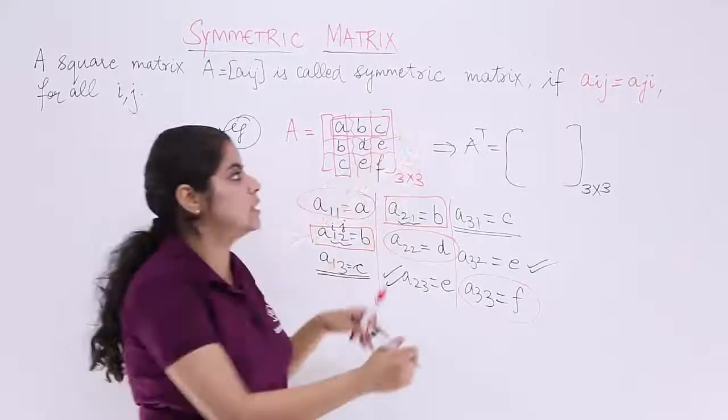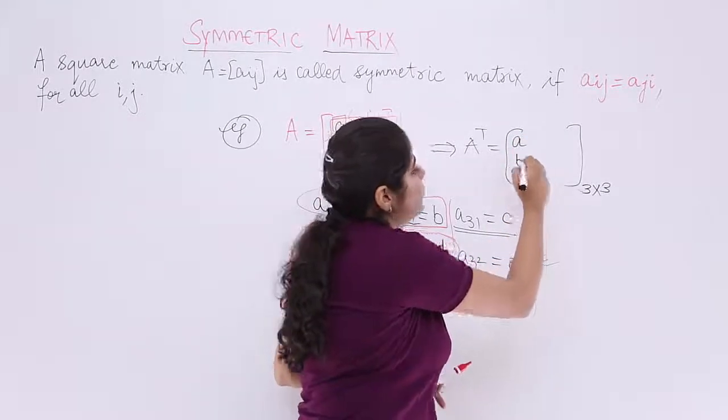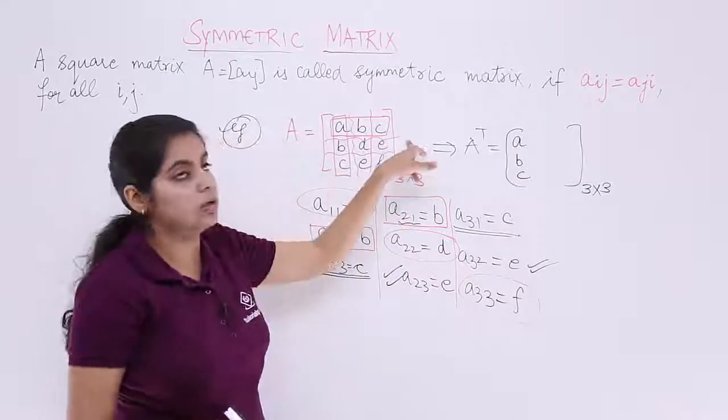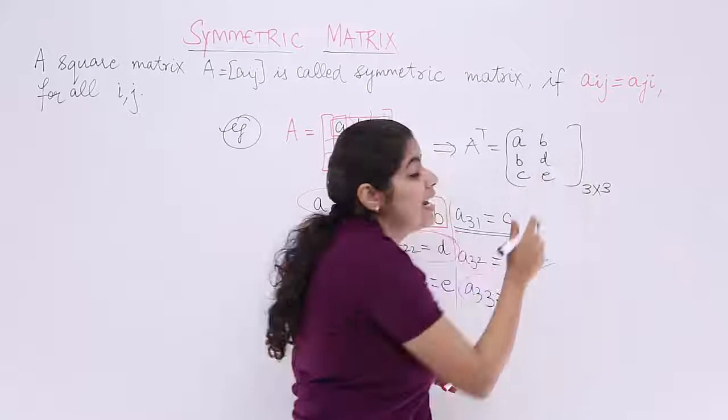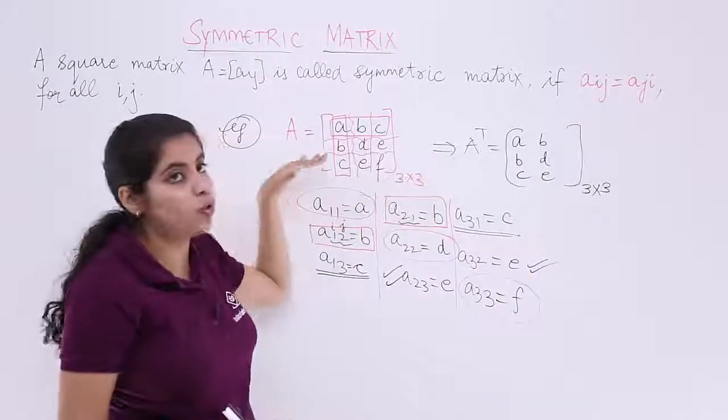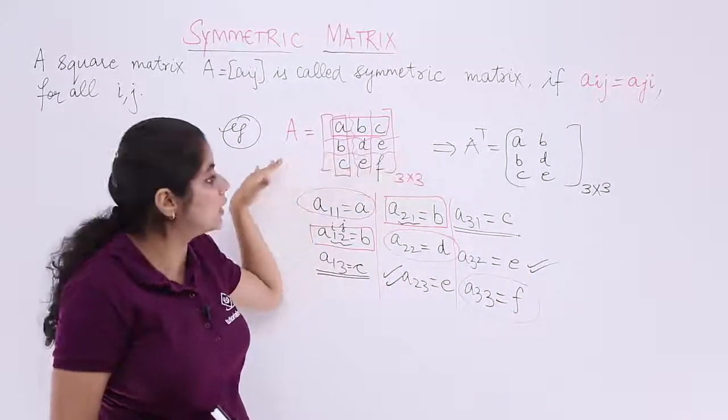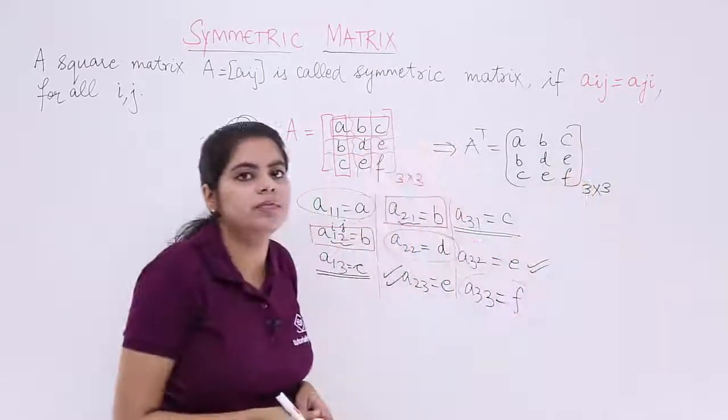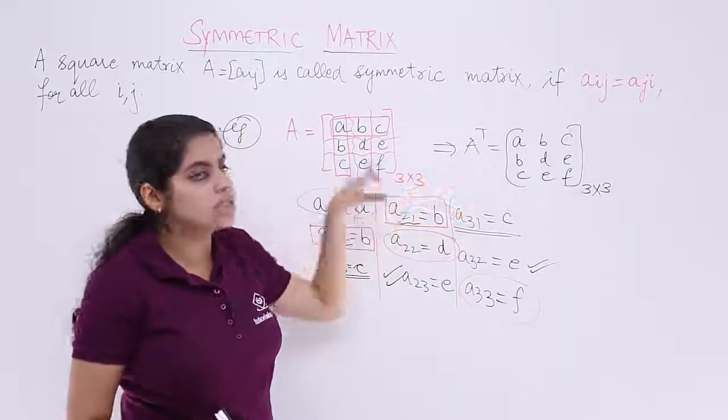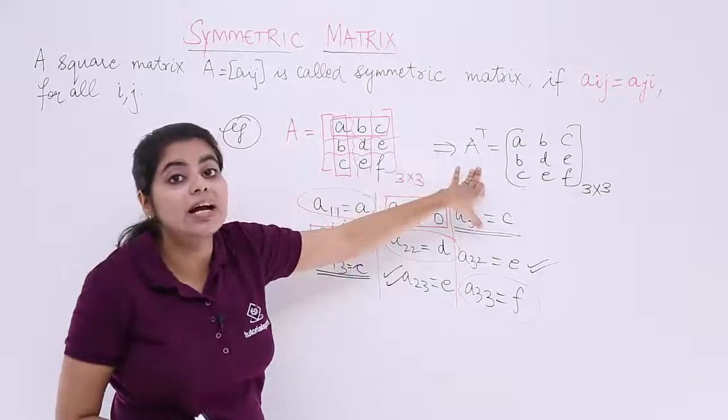So, first row is ABC, make it the first column. Second row, horizontal, BDE, make it the second column. Last but not the least, third row, vertical not horizontal but CEF, make it here. So now see, are these two matrices not same? They are exactly the same.